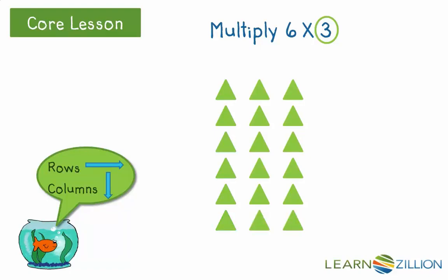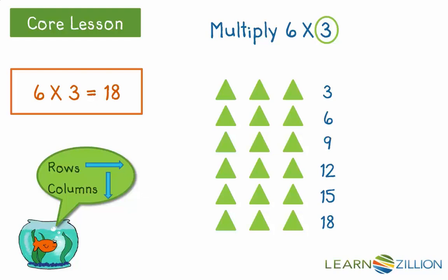Finally, we need to add up all of our triangles to find the product. In the first row, we have 3 triangles. 3 plus 3 more is 6, plus 3 more is 9, plus 3 is 12, plus 3 is 15, and 15 plus 3 is 18. We have 18 triangles total in our array. So, 6 times 3 equals 18.